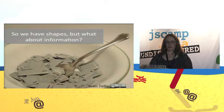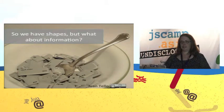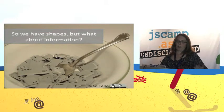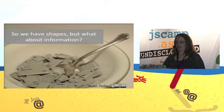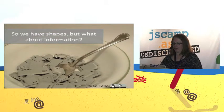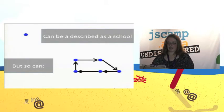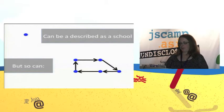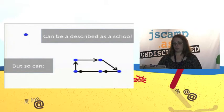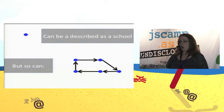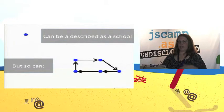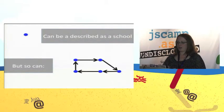Drawing shapes doesn't really say much on its own. If you have a point and don't say that it's a shop, it's not really that useful. With the flexibility of the data model, you can describe a point as a school or a polygon — it all depends on the level of detail of information you have.